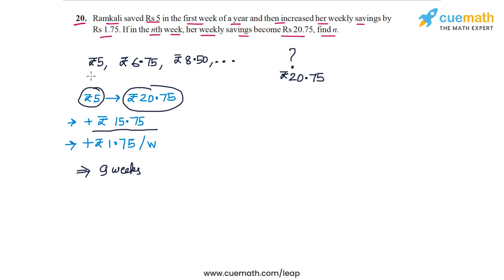Now this is week 1. Rs. 5 corresponds to week 1, and because there are now 9 weeks after the first week, then the week of Rs. 20.75 will be 9 plus 1 or week number 10. So make sure that you understand this point carefully. Because Rs. 5 corresponds to the first week and there are 9 weeks that succeed the first week after which the saving hits Rs. 20.75.